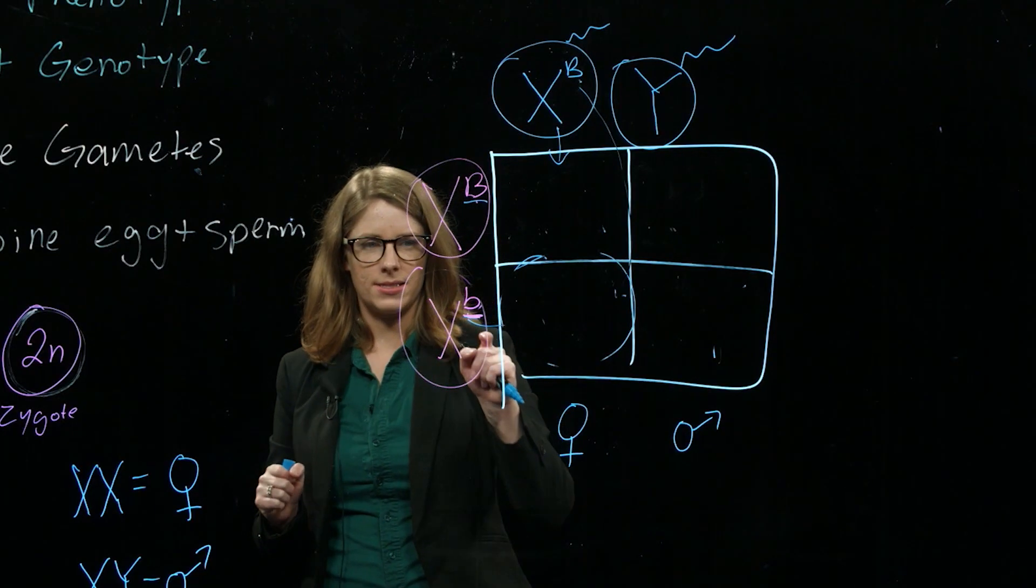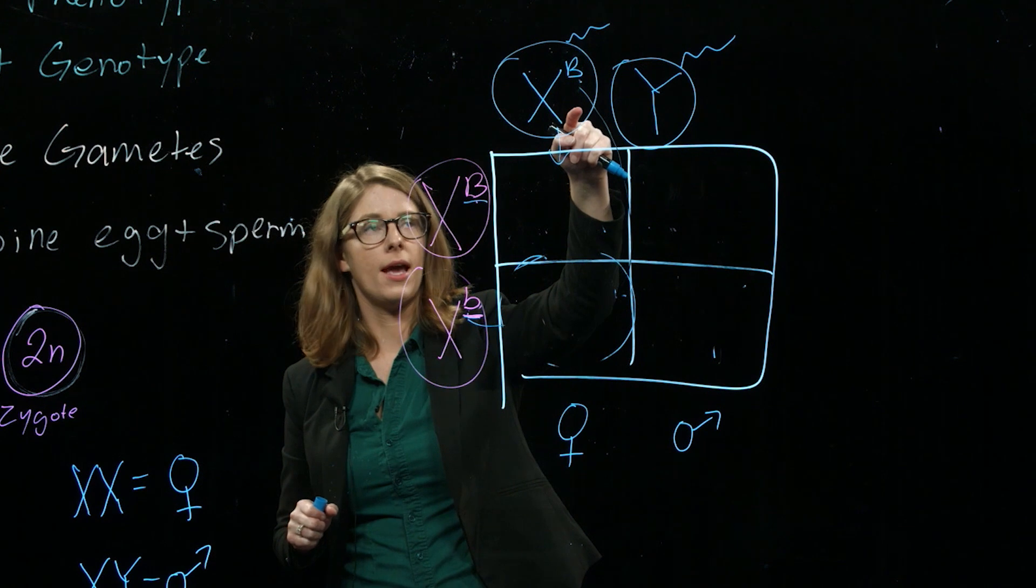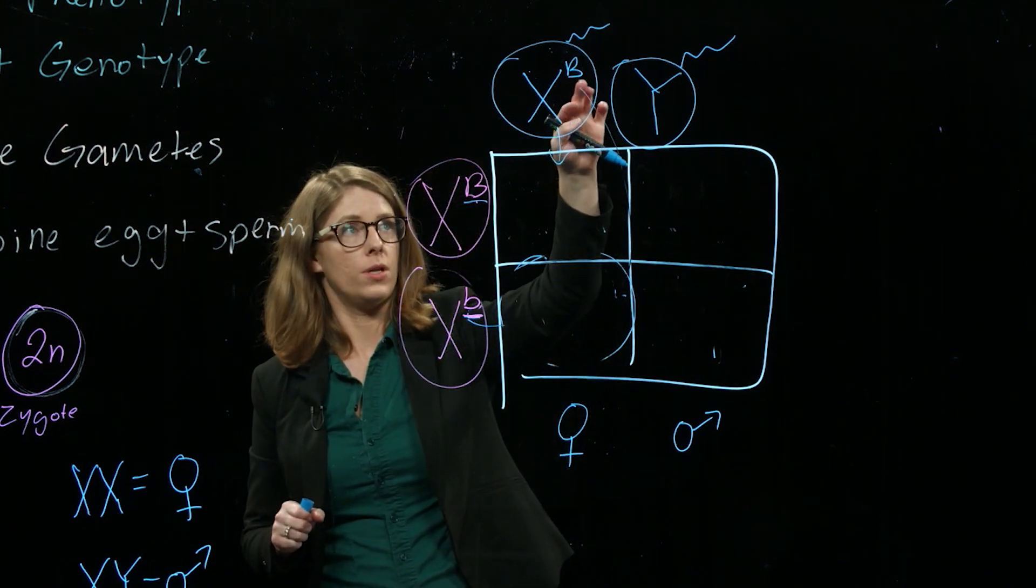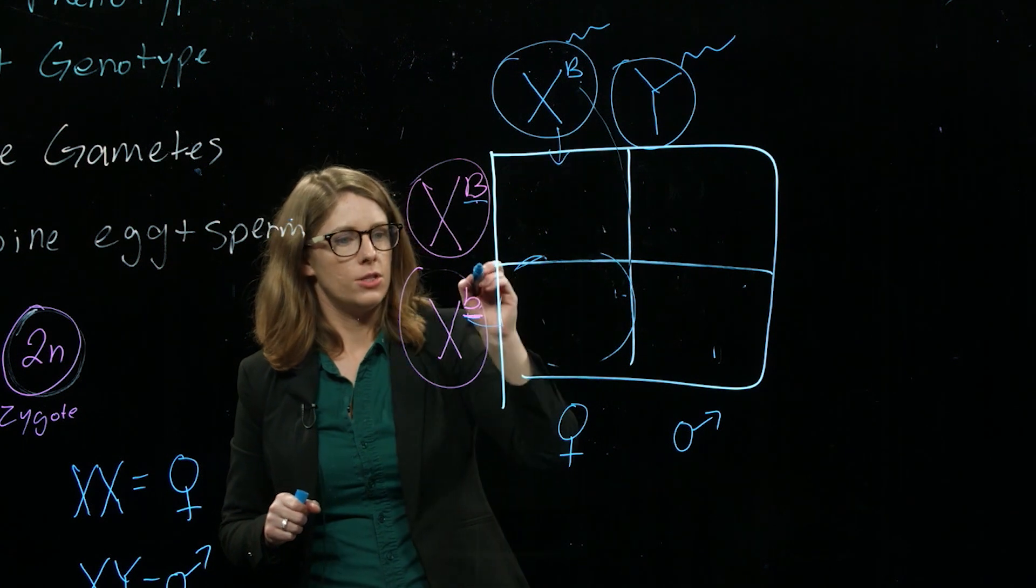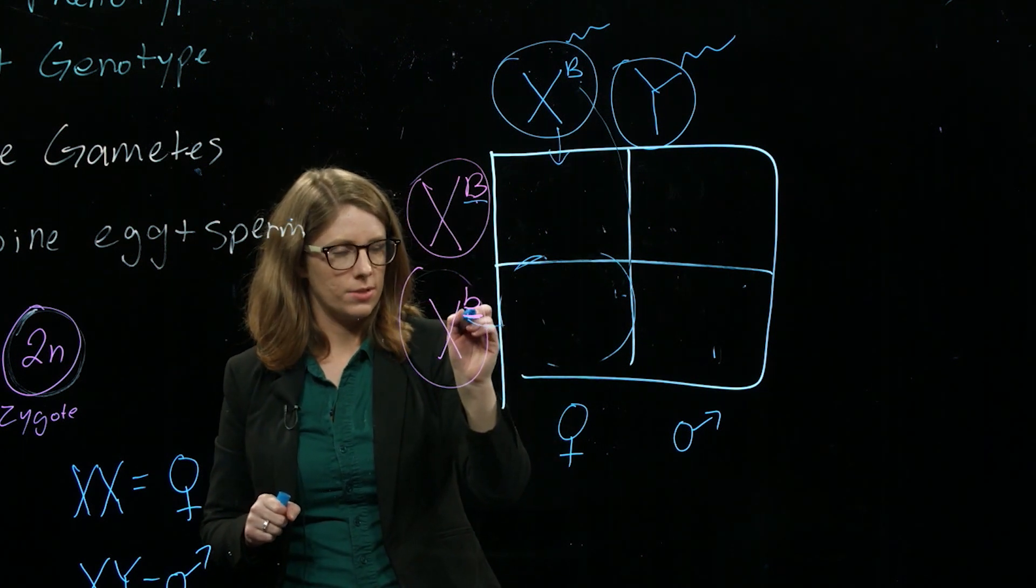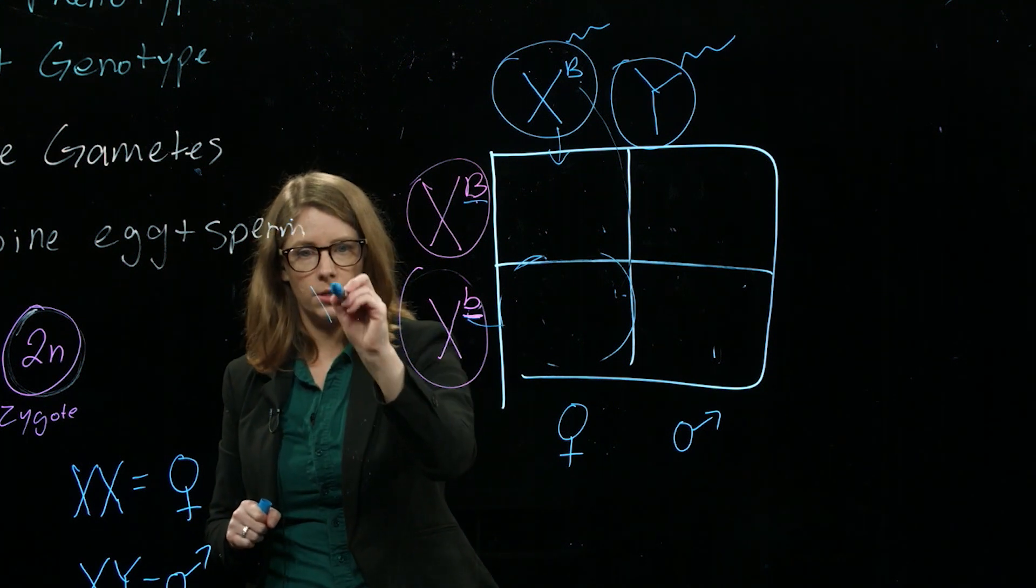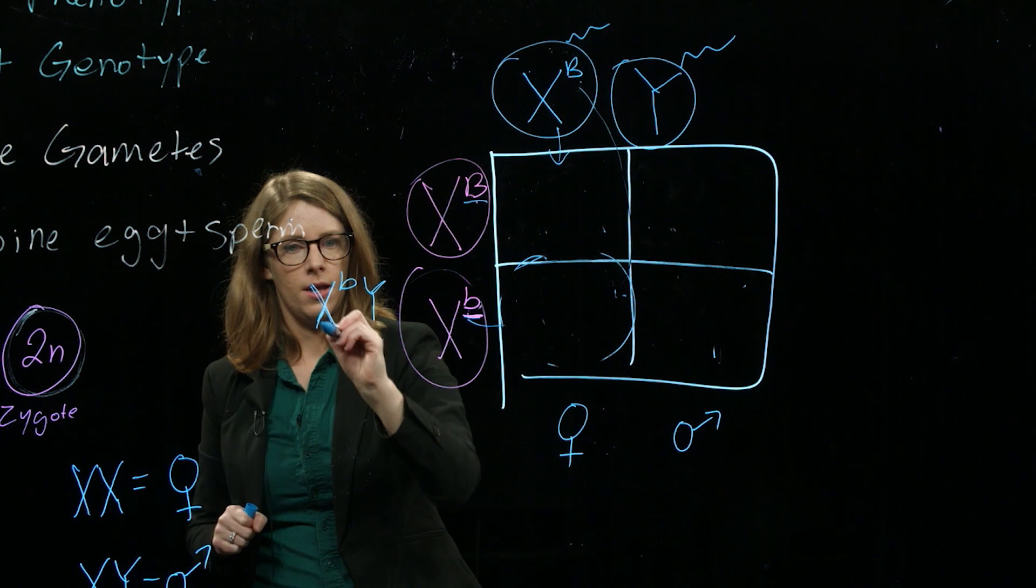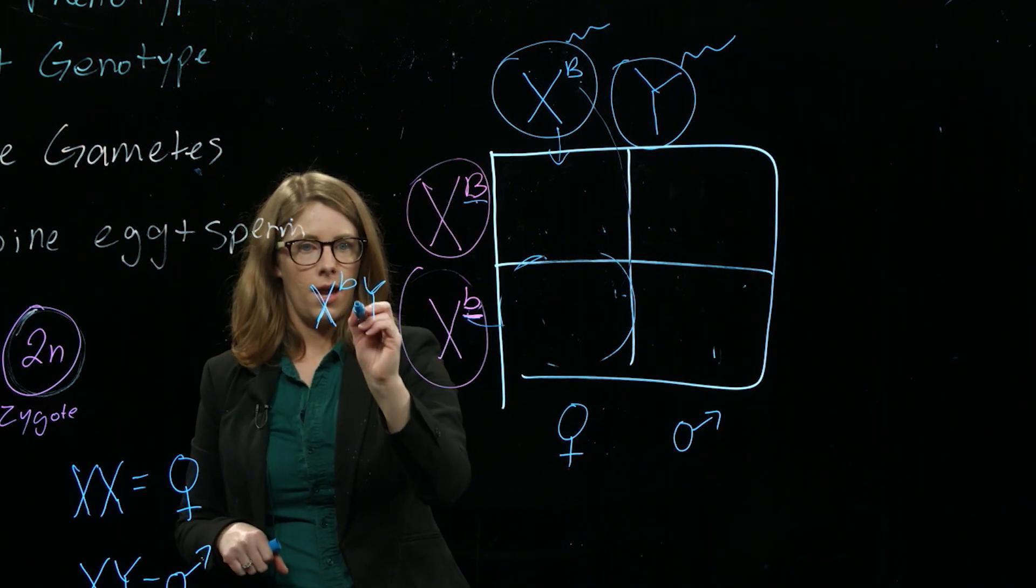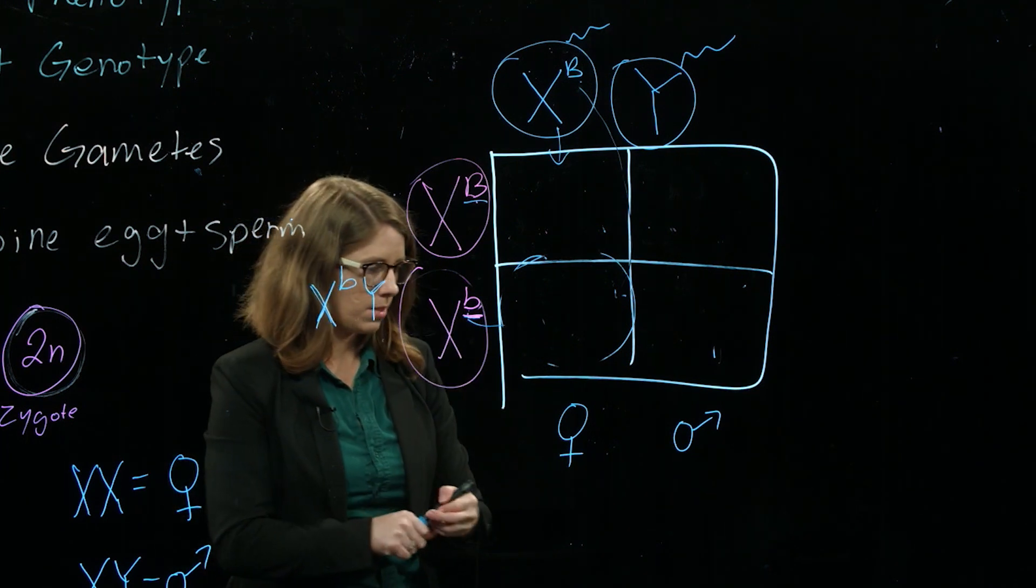So let's cross this carrier woman with a guy who is not colorblind. He has normal color vision with one dominant allele—that's all he needs. She is a carrier, so she got that recessive allele from her dad who was colorblind, and he gave his little b here to his daughters.